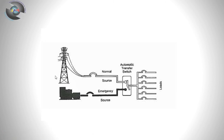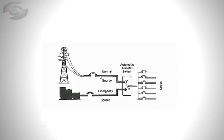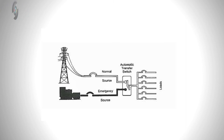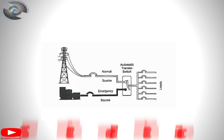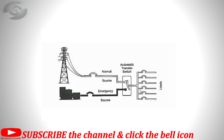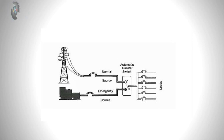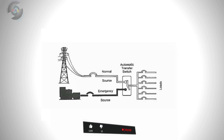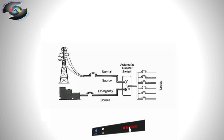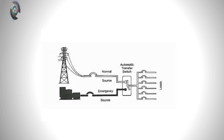When PDB is present, it is directly connected to the ADS changeover system, supplying the loads. When PDB is absent, the NC contact becomes NO and the NO becomes NC — meaning the emergency source, whether a generator or any alternating resource, connects to the load. This is how we control the ADS changeover system in any kind of industry, factory, or practical sector.